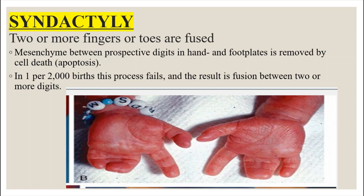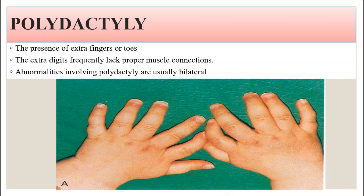Syndactyly is where you have two or more fused fingers or toes. In normal development, mesenchyme between prospective digits in the hand and foot plates is removed by apoptosis. But in about 1 per 2,000 births this process fails, resulting in fusion between two or more digits. Polydactyly is the presence of extra fingers or toes; the extra digits frequently lack proper muscle control, and the condition is usually bilateral.